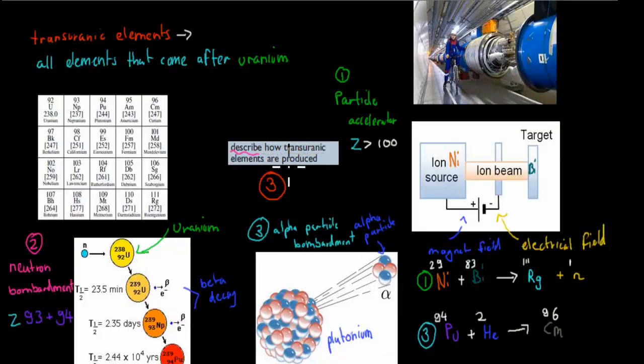Describe how transuranic elements are produced. First, we need to know what a transuranic element is. That's all elements that come after uranium in the periodic table. So here's uranium at 92. So anything above 92 is a transuranic element. There's three main ways that we can produce them. One of the most important ones is your particle accelerator. Now this is actually a picture of the particle accelerator. Basically, a particle accelerator is a huge, long tube. We have our ion, which is our source ion, and then we have our target ion.